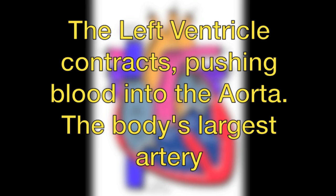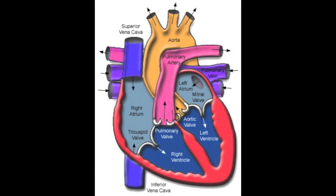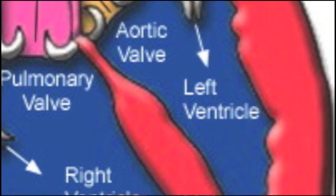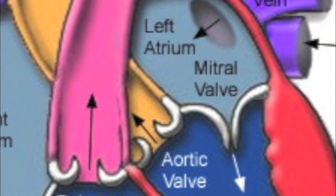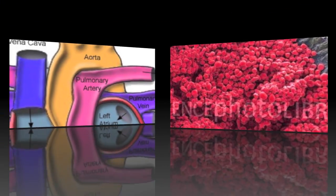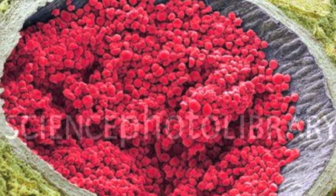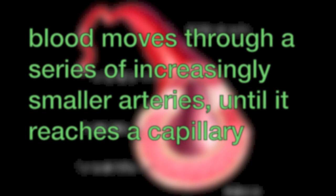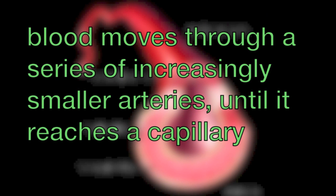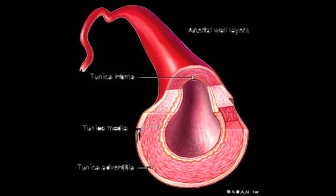In the heart, the left ventricle contracts, pushing red blood cells into the aorta, the body's largest artery. From here, blood moves through a series of increasingly smaller arteries until it reaches a capillary, the connection between arteries and veins.